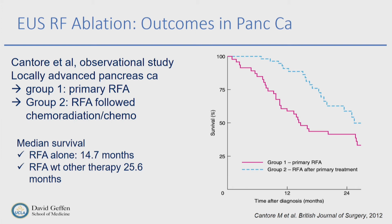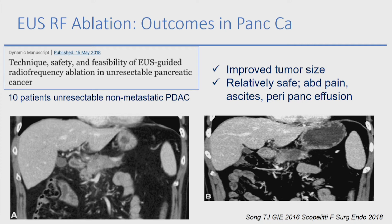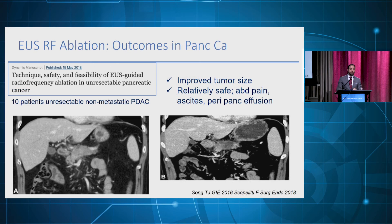Another study looked at using RFA before conventional therapy and divided patients into two groups. Patients who underwent RFA followed by conventional therapy had better outcomes and better long-term survival compared to RFA alone for locally advanced disease. Another study of 10 patients with unresectable non-metastatic cancer showed significant improvement in tumor size and was relatively safe, with no major adverse events.